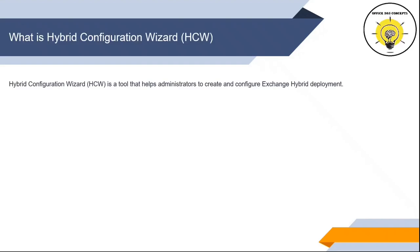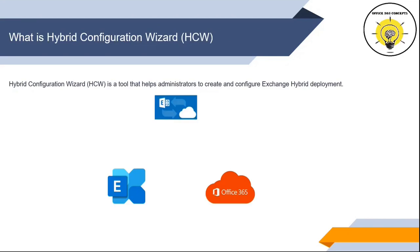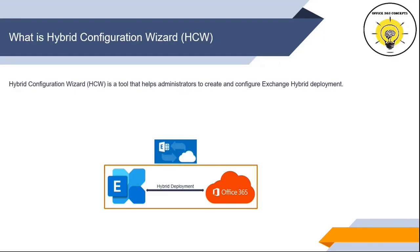Hybrid Configuration Wizard or HCW is a tool that helps administrators to create and configure Exchange Hybrid Deployment. When two different organizations want to feel a seamless look of a single organization, Hybrid Configuration Wizard helps to achieve this. Before you run Hybrid Configuration Wizard, you need to meet certain prerequisites, and once these prerequisites are met, you are ready to run Hybrid Configuration Wizard.